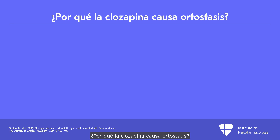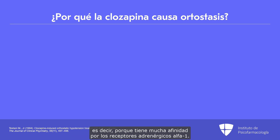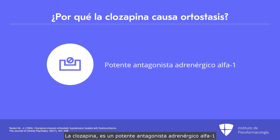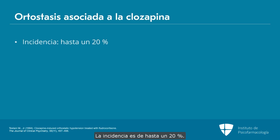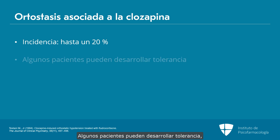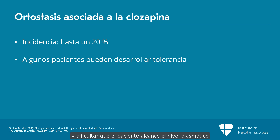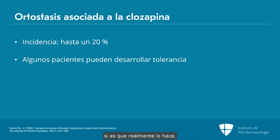Why does clozapine cause orthostasis? The same reason that most drugs do — because it has a lot of affinity for alpha-1 adrenergic receptors. It's a fairly potent alpha-1 adrenergic antagonist, and we give a lot of it. The incidence is up to 20%. Some might develop tolerance, but it can limit titration, and that may be a big problem in getting your patient to the plasma level at which they might actually respond to clozapine.